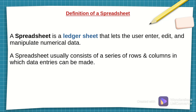A spreadsheet is basically a ledger sheet that enables the user to enter and manipulate numerical data. This ledger sheet is divided into a series of rows and columns in which data entries can be made. The intersection between a row and a column is a cell, so it's just a series of cells where numerical data can be entered and manipulated.